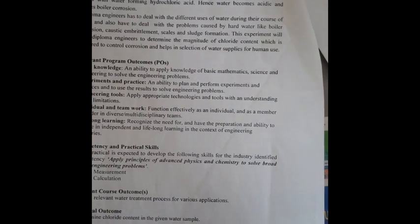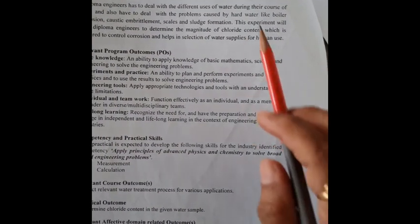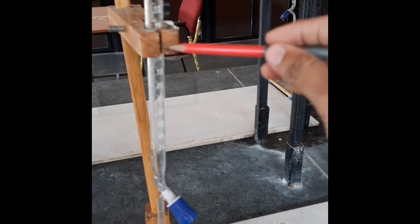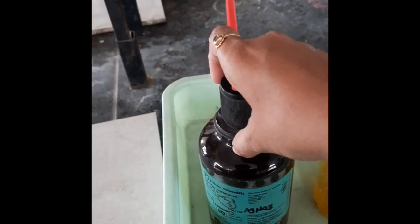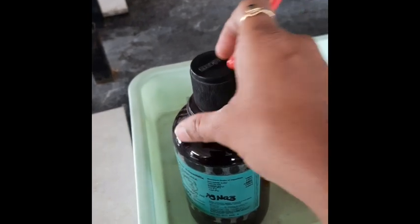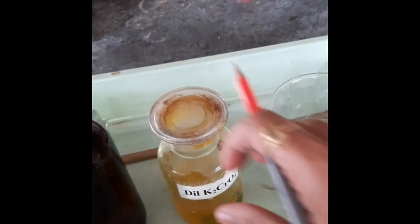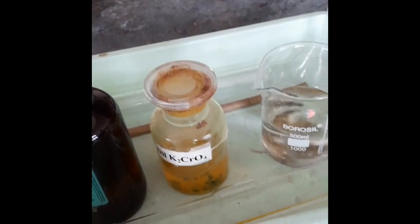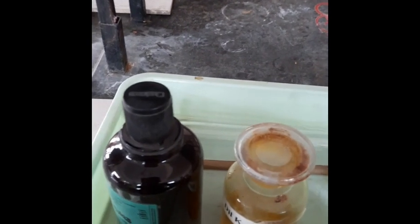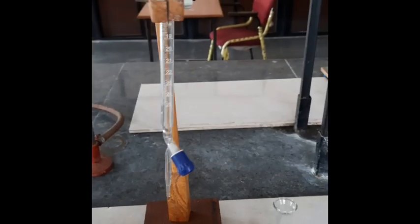Now we are going to see the actual experiment of chloride content of the water sample. Resources required for this experiment: we need a burette and a wooden burette stand. We need 0.01 molar AgNO₃ silver nitrate solution, which is stored in an amber-colored bottle to prevent oxidation of the silver. We need potassium chromate K₂CrO₄ as indicator, water sample, and a 10 ml pipette and conical flask.